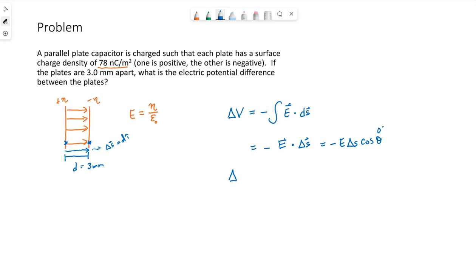So that leaves me with negative E times D. Because delta S has a length of D. I've chosen the direction so E and delta S are in the same direction, so cosine of 0 degrees is 1. Our electric field is that surface charge density over epsilon naught, and then we have D.